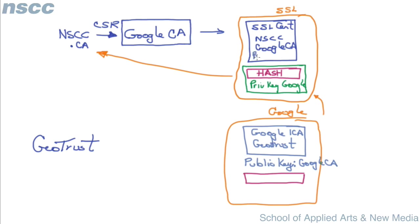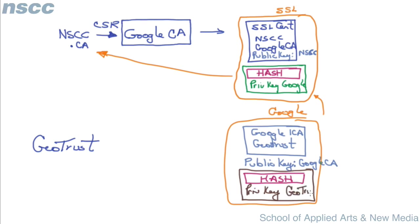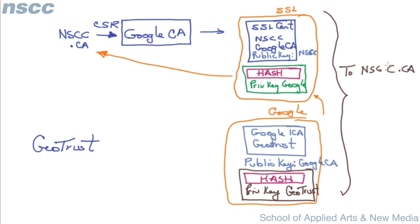The SSL certificate at the top will have the public key of NSCC, because that certificate is going to be used for secure communications with NSCC. We have all this information, a hash is made, and Google's intermediate certificate is digitally signed by the private key of GeoTrust. These two certificates are sent to nscc.ca and installed in the NSCC web server.